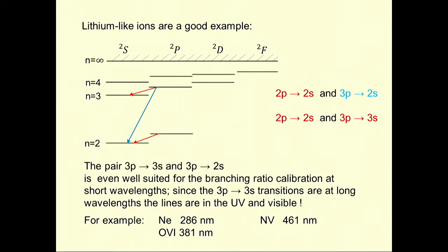A nice example: lithium-like ions are good ions for diagnostics. You take two lines — one between the upper levels, and another line excited by electron collisions. The ratio of these two lines is a strong function of the electron temperature due to the large energy spacing. The upper lines are in the visible, making them convenient to study. This was also the case used for branching ratio calibration as mentioned in the first lecture.